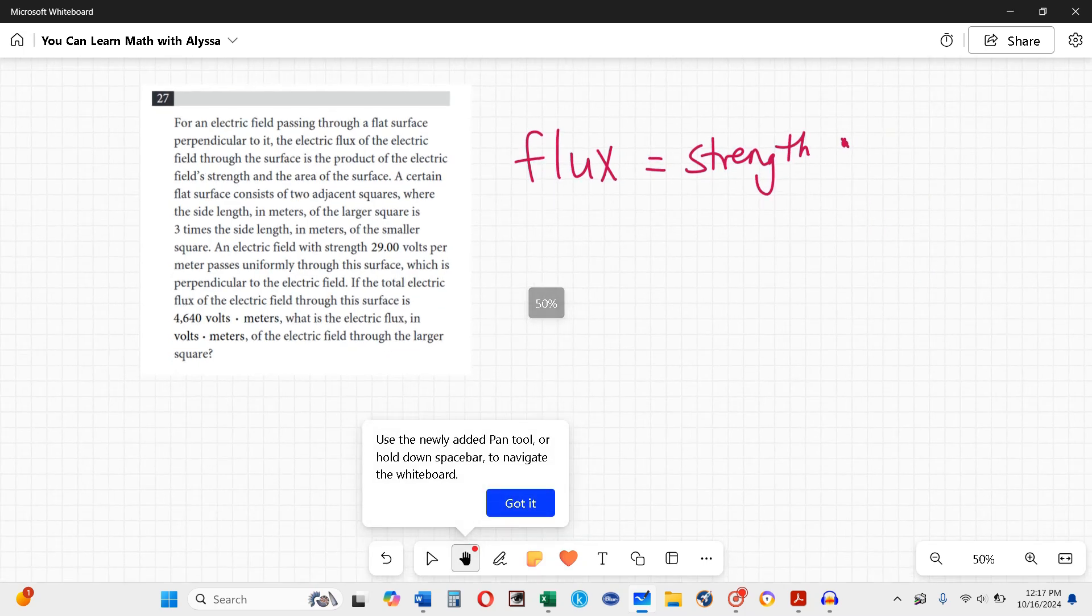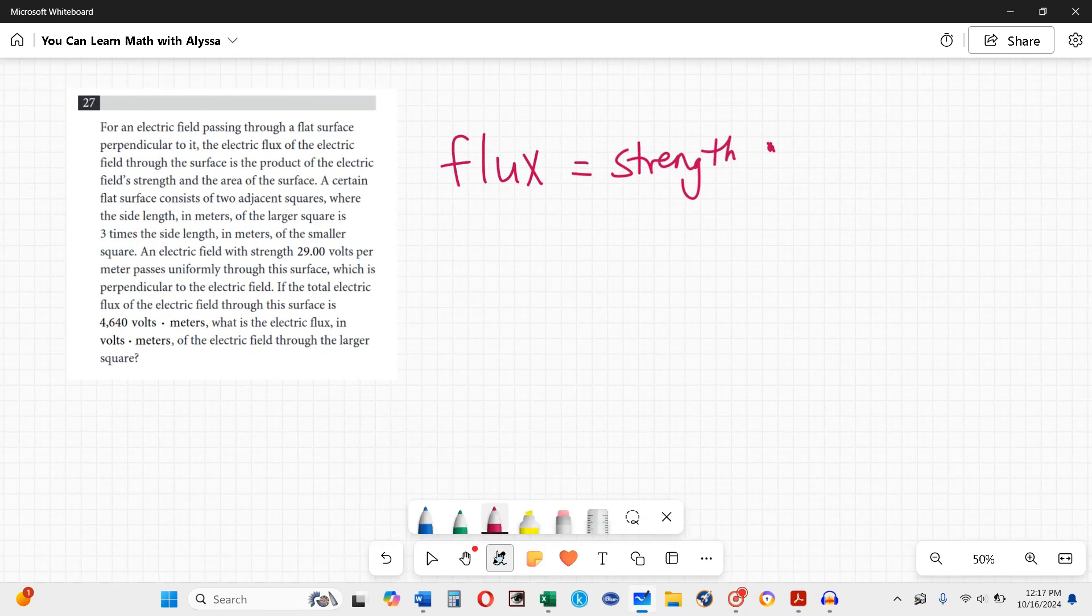Microsoft Whiteboard, I stink a lot of the time. Okay, so flux equals strength times area. A certain flat surface has two adjacent squares.